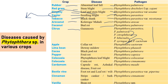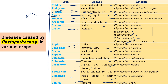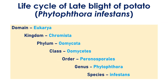Citrus gummosis is very interesting — it is caused by six species of Phytophthora: P. parasitica, P. palmivora, P. citrophthora, P. hibernalis, P. syringae, and P. cactorum. Other diseases include: apple collar rot — P. cactorum; lime downy mildew — P. fascioli; cocoa black pod rot — P. palmivora; pepper fruit rot — P. capsici; colocasia com rot — P. colocasiae; cardamom capsule rot — P. meadii; beetlevine leaf rot — P. parasitica var. piperina; cinnamon bark canker — P. cinnamomi; and vanilla bean rot — Phytophthora species.